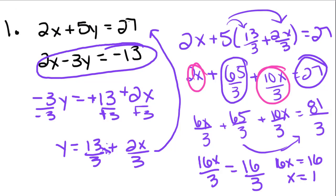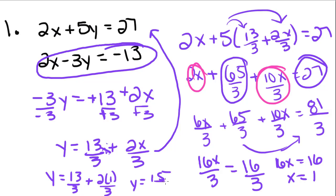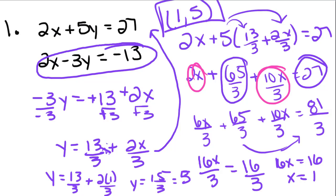We're going to plug 1 back into the equation already solved for y. So y equals 13 over 3 plus 2 times 1 over 3, which gives 13 over 3 plus 2 over 3, or 15 over 3, which equals 5. Our solution for this problem is (1, 5). That's all for today — make sure you come back and watch the next lesson, where we're going to talk about two other ways to solve systems of equations.